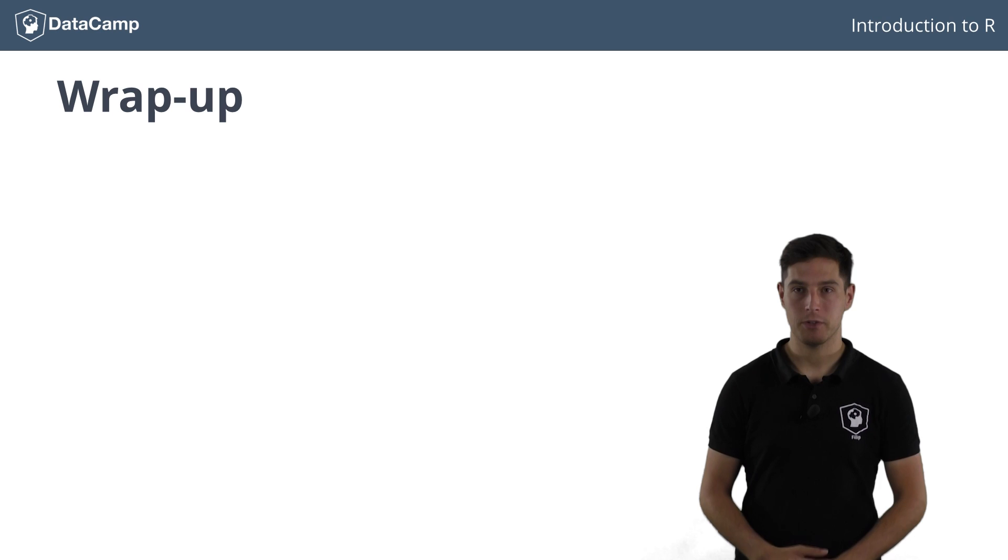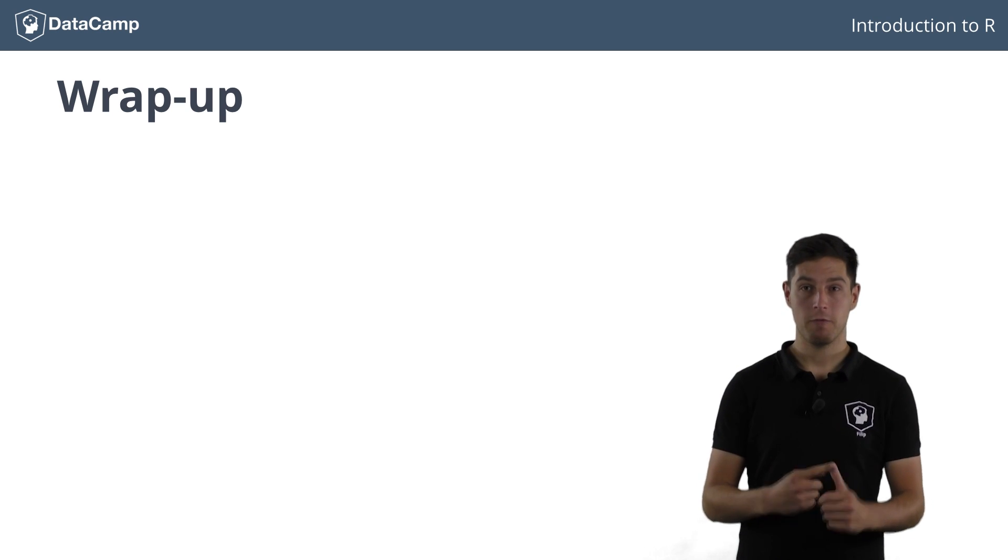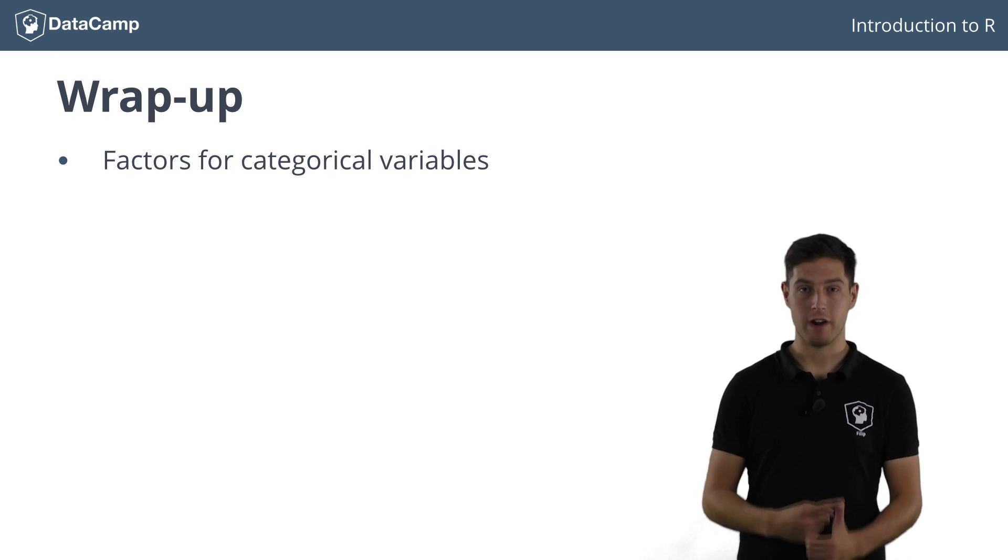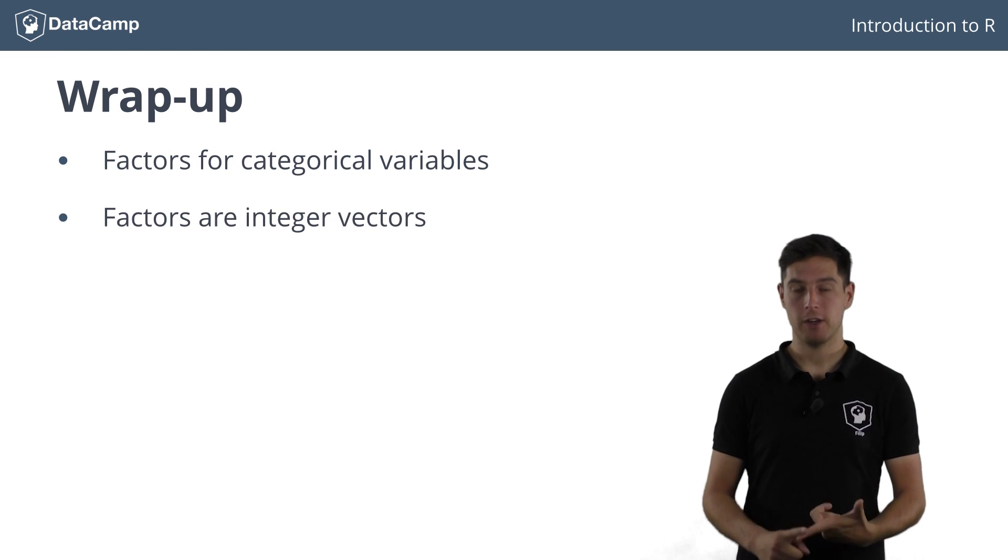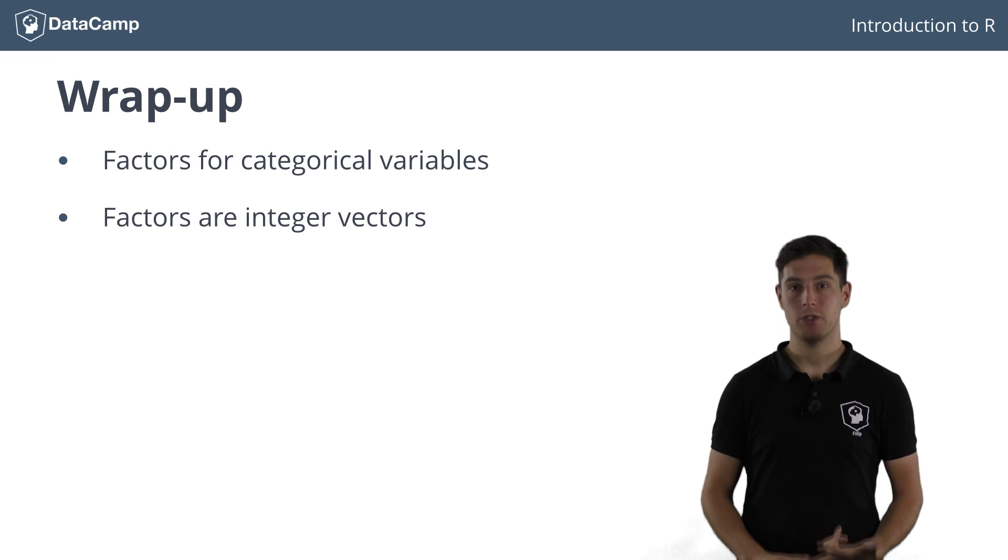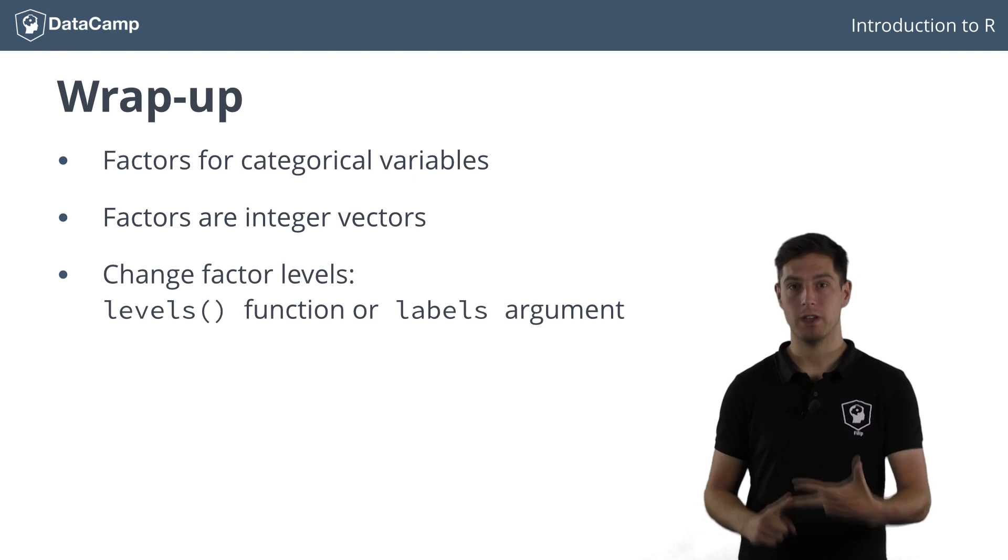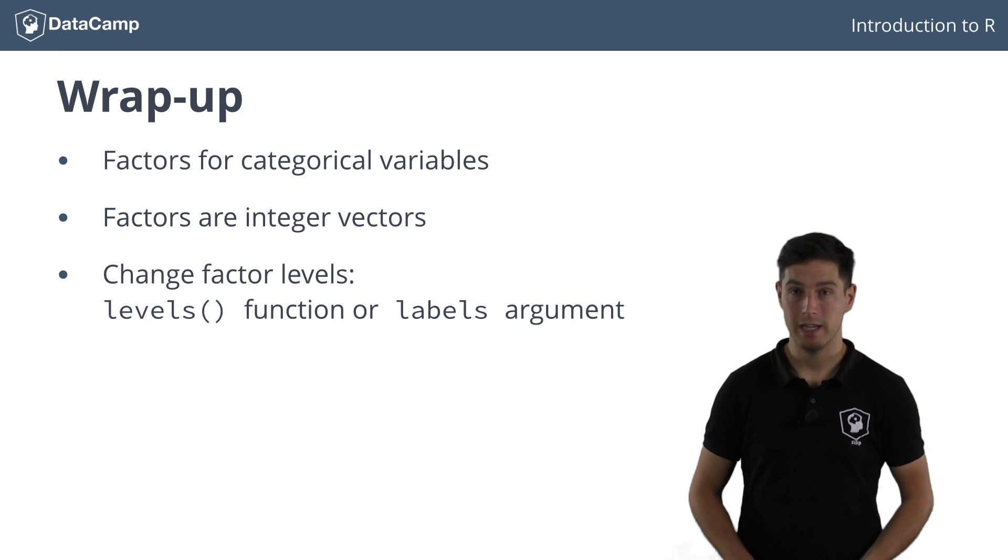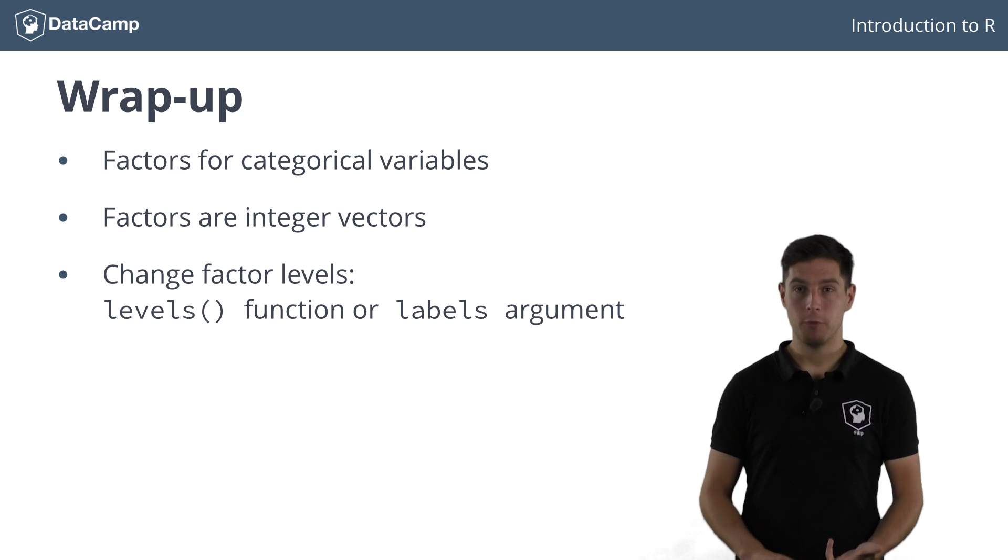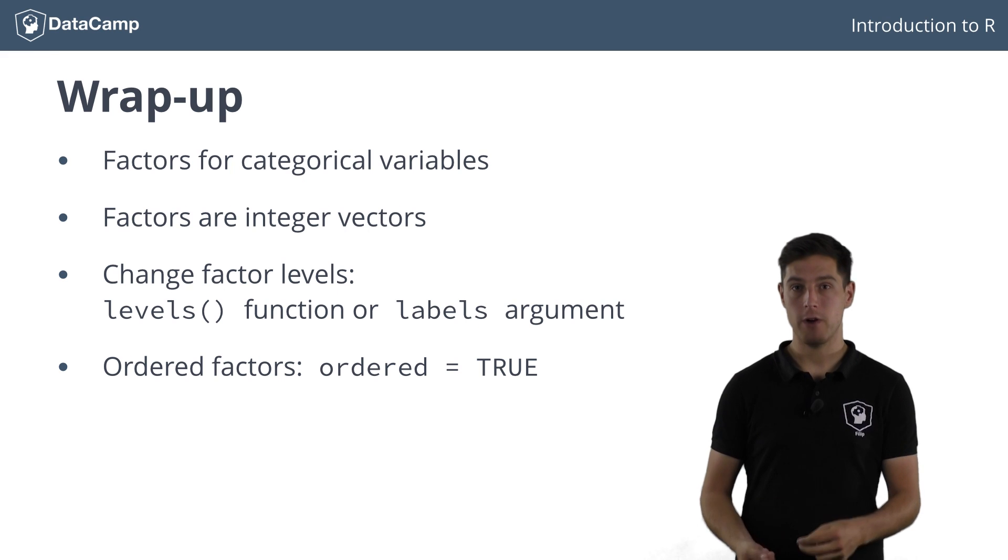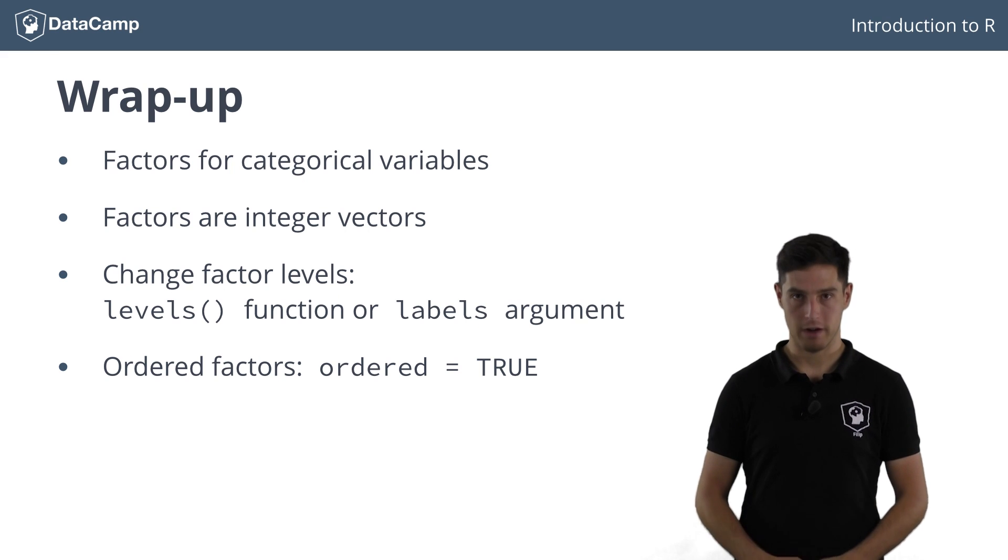Before you can start with the exercises, let's shortly wrap up on factors. First of all, factors are used to store categorical variables in R. Second, these factors are simply integer vectors that have factor levels associated. Third, you can change the factor levels using the levels function, or by using the labels argument inside the factor function. And last but not least, R allows you to make a difference between ordered and unordered factors, thus catering to both nominal and ordinal variables.